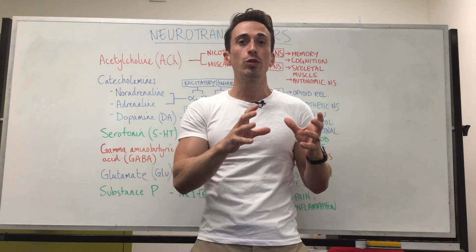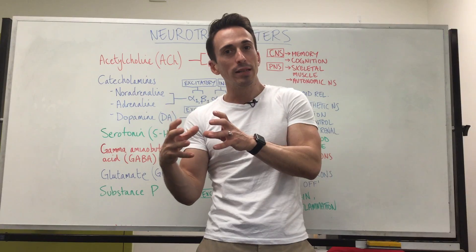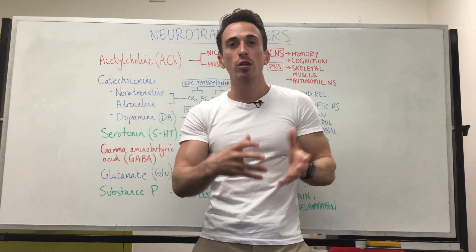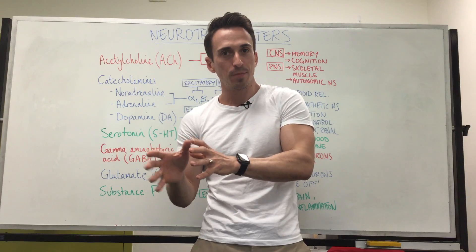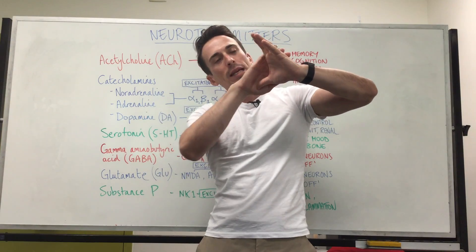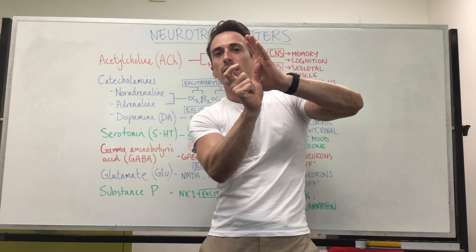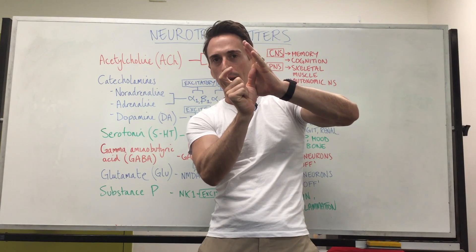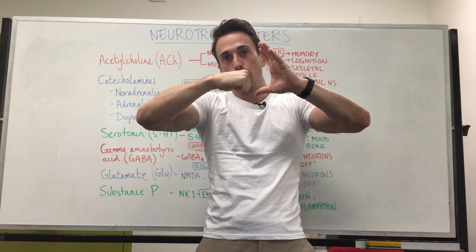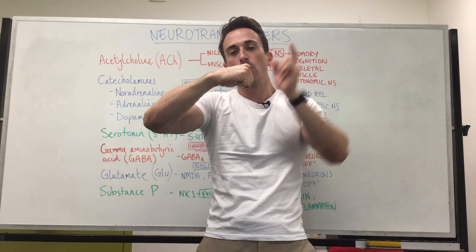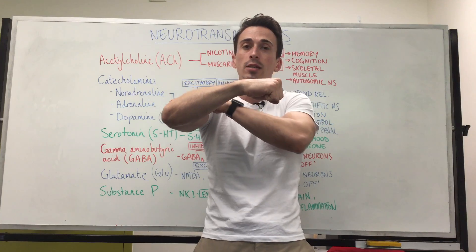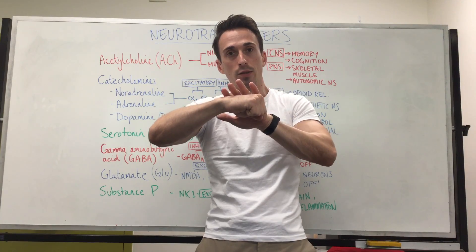Neurotransmitters are chemicals that are produced and released by neurons, and they can either have an excitatory or inhibitory effect. When a neuron releases a neurotransmitter, it releases it into a gap called a synapse — the gap between one neuron and the next neuron. Neurotransmitters that bind to the next neuron will either excite it to send a signal or inhibit it from sending a signal.